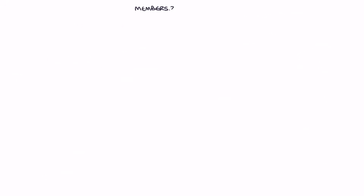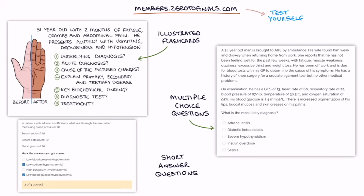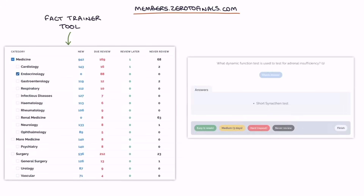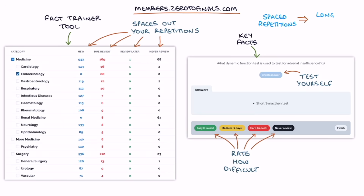Now head over to members.zerotofinals.com to test yourself on how much you understood and remembered from this video. The members site contains illustrated flashcards, multiple choice questions, and short answer questions designed to complement the Zero to Finals resources. It also features an Anki-like fact trainer tool where you test yourself on a fact, rate how difficult you found it, and the site spaces out your repetitions and tells you when you're due to review it again — helping ensure facts stay in your long-term memory.